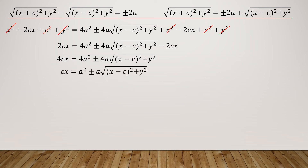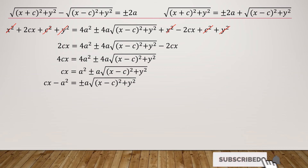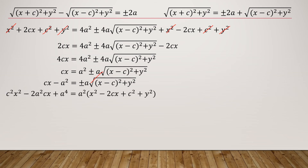Dividing all terms by 4, we have cx = a² ± a·√[(x - c)² + y²]. Adding -a² to both sides and squaring both sides again to eliminate the remaining radical, the left-hand side becomes c²x² - 2a²cx + a⁴. By the distributive property, the right-hand side becomes a²(x² - 2cx + c² + y²) = a²x² - 2a²cx + a²c² + a²y².